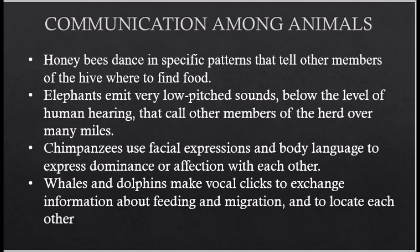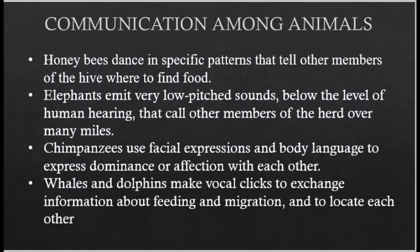Now let's see if animals can communicate. Yes, of course — animals do communicate with each other in several ways: for food, security, warnings, and to locate each other. For example, honeybees dance in specific patterns to inform other members of the community about food locations. Elephants emit very low-pitch sounds that humans cannot hear, which they use to call members of the herd. Chimpanzees use facial expressions and body language to express dominance, hatred, feelings, and affection. Whales and dolphins make vocal clicks and even sing to exchange information about feeding, migration, and locating each other. Communication is truly all around us.